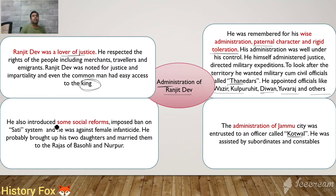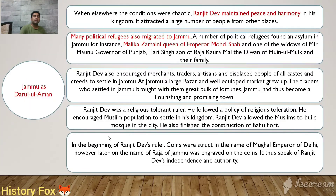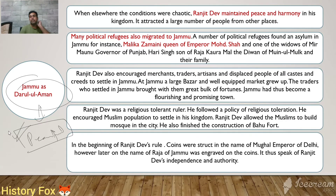Ranjit Dev was a lover of justice. He respected the rights of people including merchants, travellers and immigrants. Even the common man had easy access to the king. He also introduced social reforms: he imposed a ban on the sati system and was against female infanticide. During his time period, Jammu was known as Darul Aman — a city of peace. A large number of migrants and political refugees found asylum in Jammu due to his policies of peace and harmony.